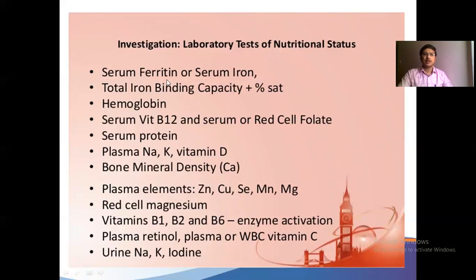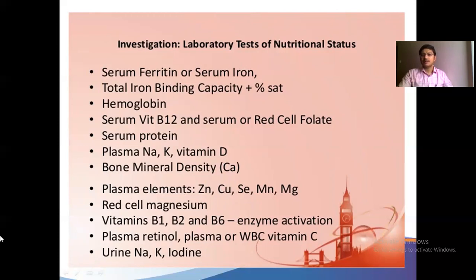Biochemical parameters are important. For example, hemoglobin may be 12 — not very low — but serum ferritin and serum iron may still be low, requiring supplementation. Total iron binding capacity (TIBC) sometimes needs checking. Vitamin B12 is deficient in vegetarian populations. Serum protein should be checked, along with plasma sodium, potassium, vitamin A, D, calcium, iron, zinc, copper, selenium, and magnesium. These can be assessed through blood tests to understand your nutrition status and what needs attention.